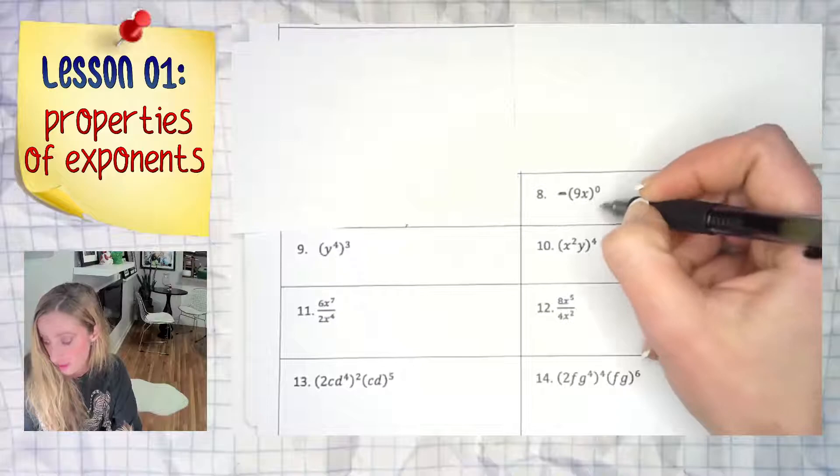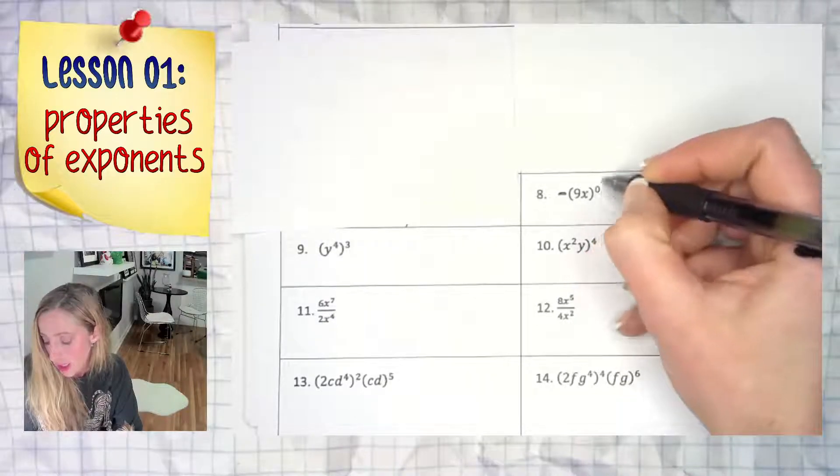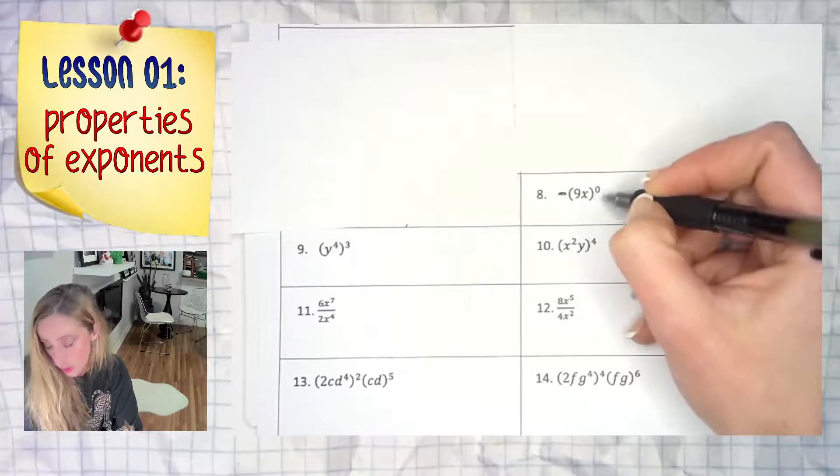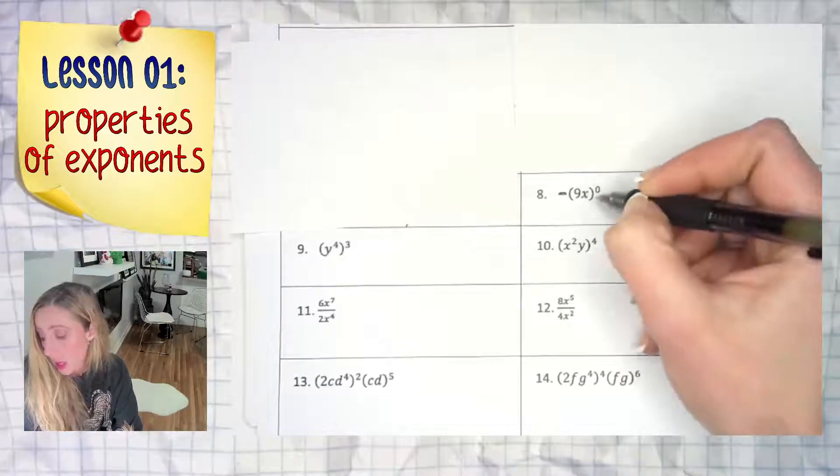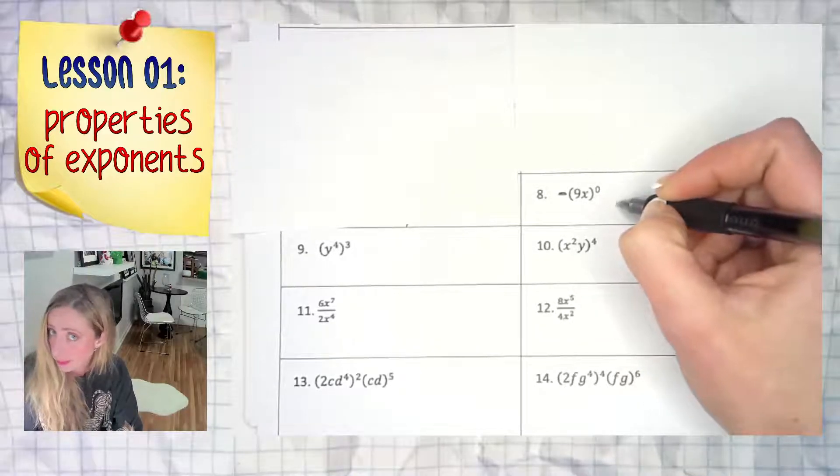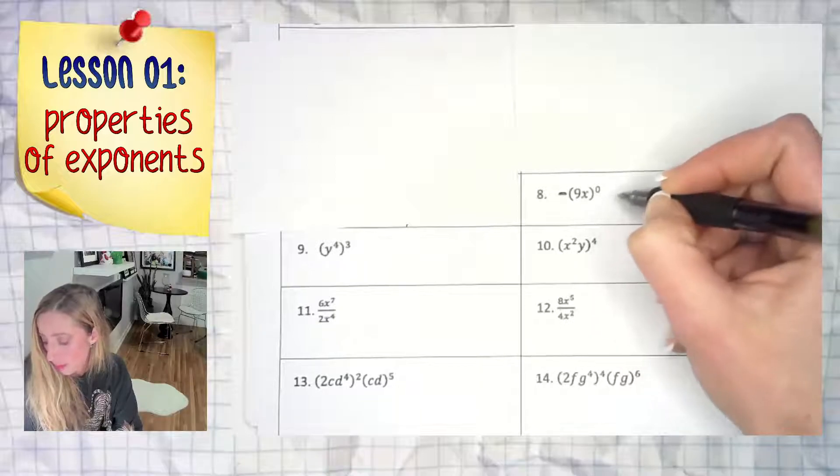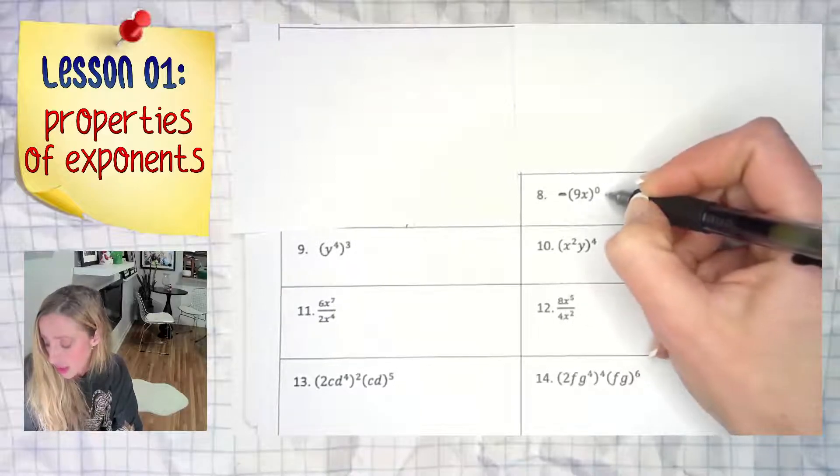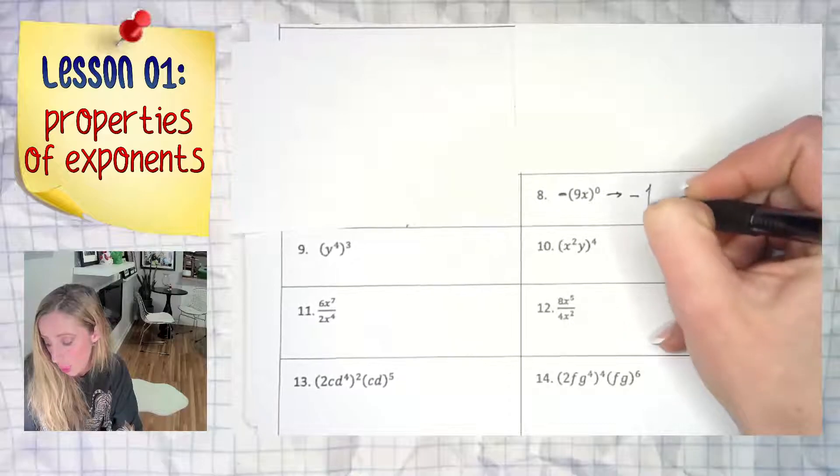Anyhow, any number to a zero power, except zero to the zero power, is going to equal one. So then this answer will in fact be negative one.